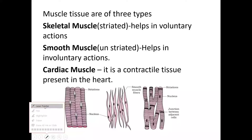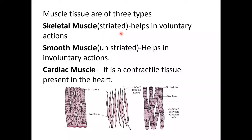Muscle tissues are of three types. First: Skeletal muscle, which is striated muscle, and it helps in voluntary actions. Second: Smooth muscle, which is unstriated muscle — the muscle fibers help in involuntary actions such as digestion and respiration. These are unstriated muscles.